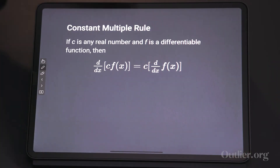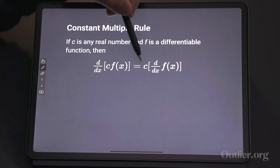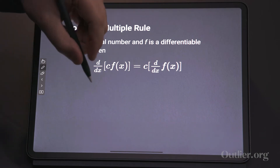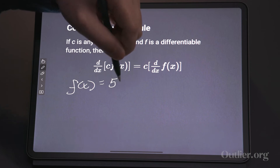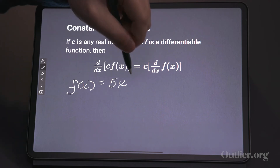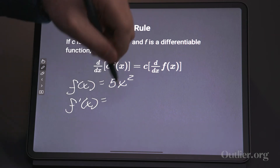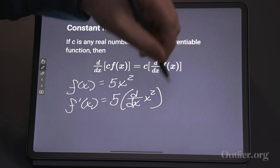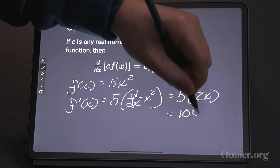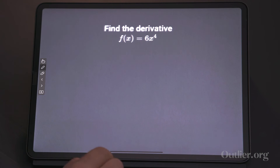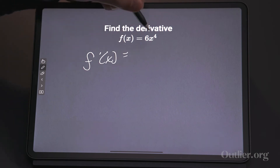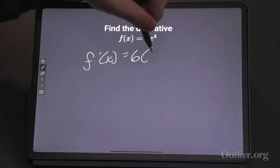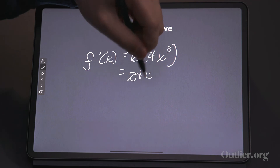How about the constant multiple rule? If you have a constant times a function, the constant can come out and you just take the derivative of the function itself. For instance, if f of x equals 5x squared, then f prime of x equals 5 times d/dx of x squared, which equals 5 times 2x, which equals 10x. Here's another one: if f of x equals 6x to the fourth, then f prime of x equals 6 times 4x cubed, which equals 24x cubed.